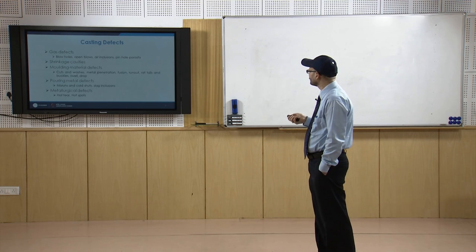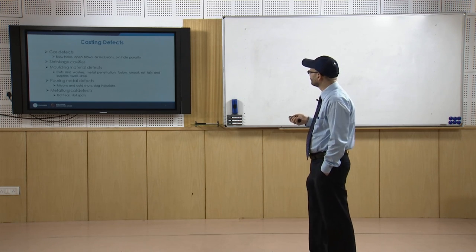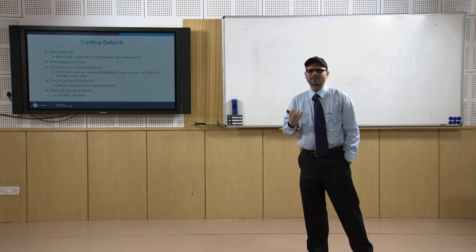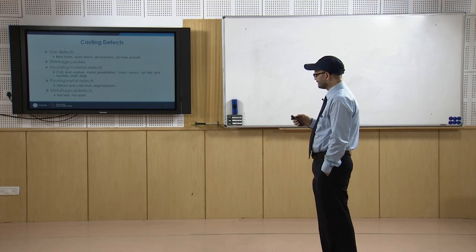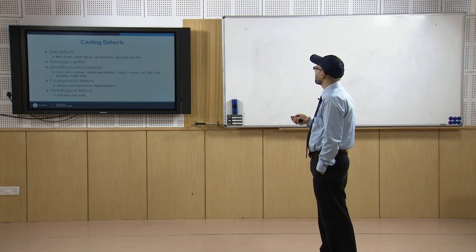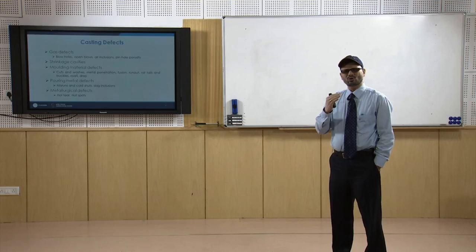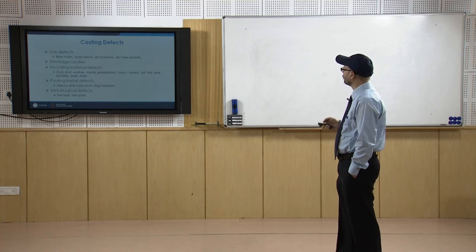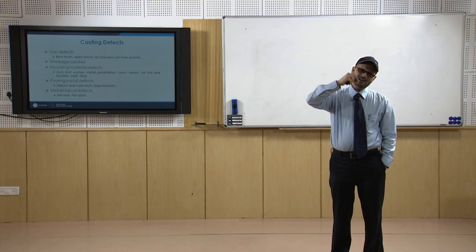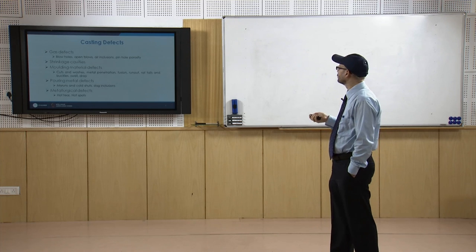Air inclusions are a variety of gaseous defects because of air entrapment or sucking of air. Pinhole porosities are typically because of gases like hydrogen. Hydrogen in the melt, if not able to escape, comes out in later stages in the form of very fine holes, giving a fine pinhole-type structure on the surface — that is known as pinhole porosities.